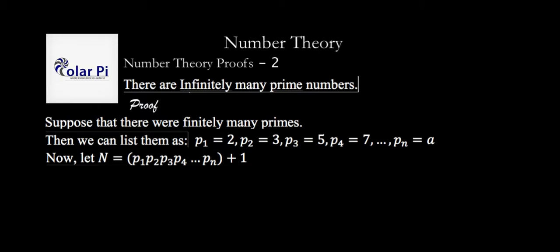So this number N is not divisible by any of the primes P1 through PN. And I'm saying P1 through PN. I should be saying sub instead of just PN, but you get it, you get it. Okay, cool.